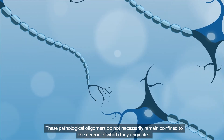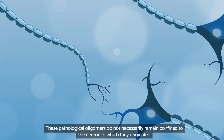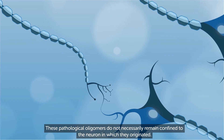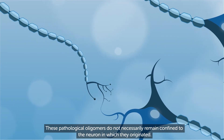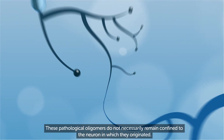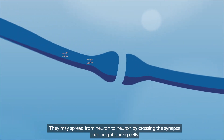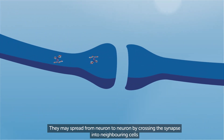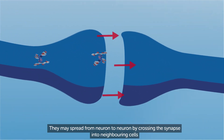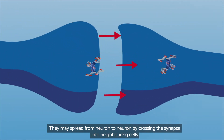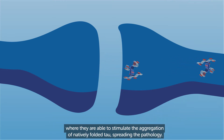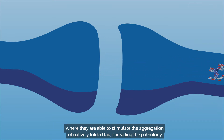These pathological oligomers do not necessarily remain confined to the neuron in which they originated. They may spread from neuron to neuron by crossing the synapse into neighbouring cells, where they are able to stimulate the aggregation of natively folded tau, spreading the pathology.